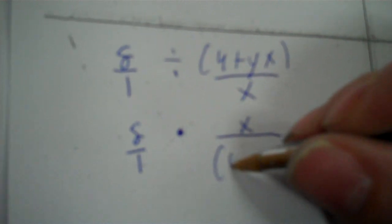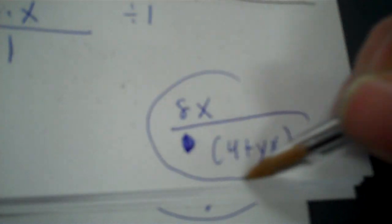Switch that to multiplication. The 8 stays over 1, but then x comes to the top and the quantity 4 plus yx goes on the bottom. The parentheses are in the answer — the only way they'd cancel is if you had a matching quantity on top, which you don't. Outside factors: 8 times x on top and 1 on the bottom — 8 and 1 can't simplify, and x has no matching x on the bottom to cancel with. So the answer is 8x over the quantity 4 plus yx.